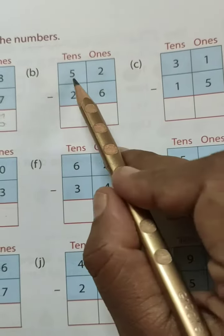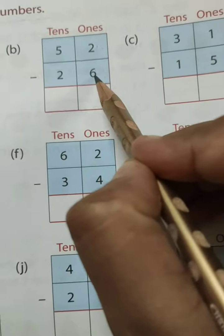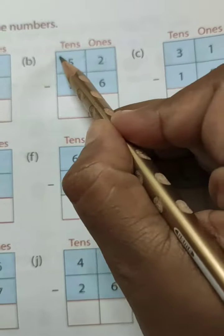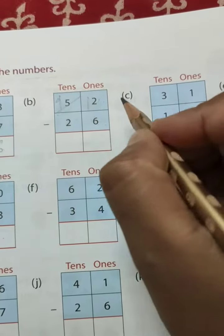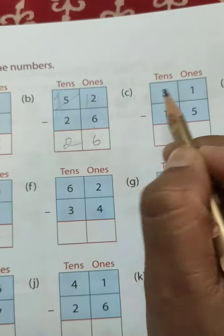Yaha pe dekho 52, 26. Toh 2 hai. Matlab 6 se chota hai. Toh you have to borrow 1 tenth from 5. 5 becomes 4. And 2 becomes 12. 6 ke baad 12 tak count karo, it will be 6. 4 minus 2 is 2. Understood?